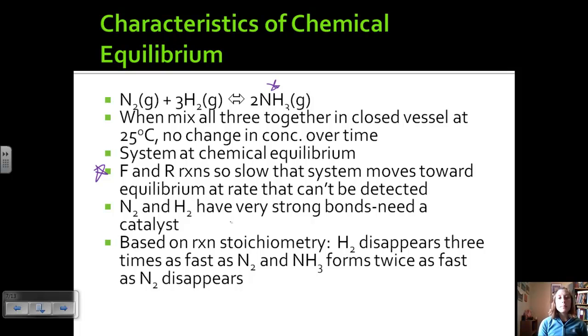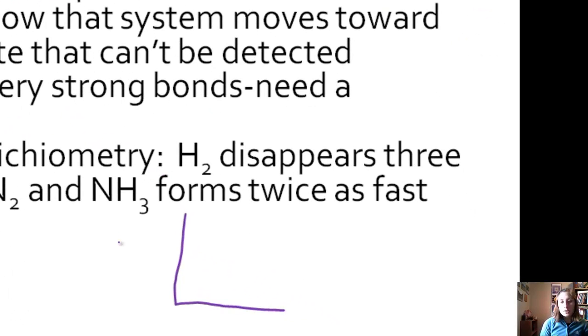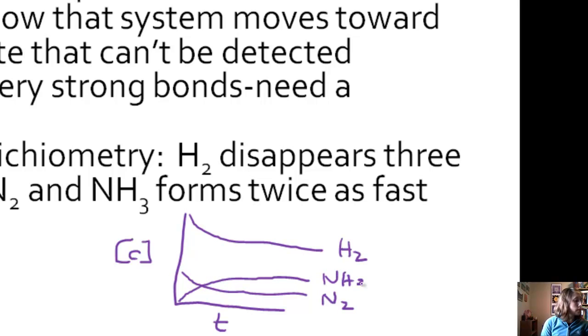Also notice that based on reaction stoichiometry, if we take a look at our coefficients, hydrogen disappears three times as fast as nitrogen because of the three here. And ammonia forms twice as fast as the nitrogen disappears. So these would be relative rates based on the coefficients. Let's just look real quick at a graph of this reaction. We see, just like we looked at before, concentration and time. We've got N2, about right here. And then because we have three H2s, it's kind of up here. And then our NH3, we're starting from nothing, kind of doing this, because that's two NH3s. So we see here that they kind of level off, and so now we're at equilibrium. This reaction just takes a very long time to get there.